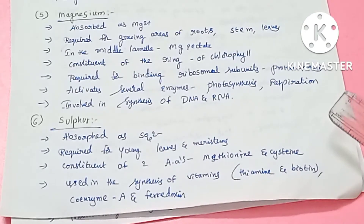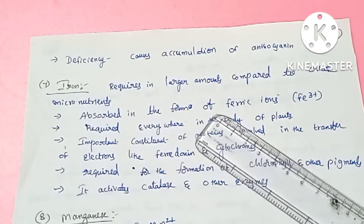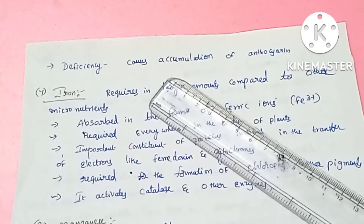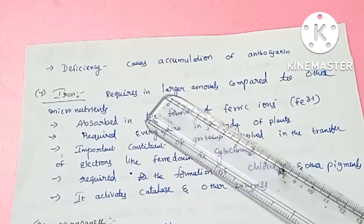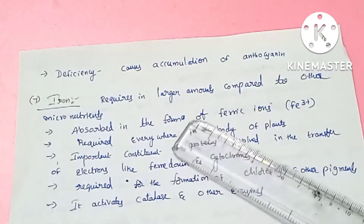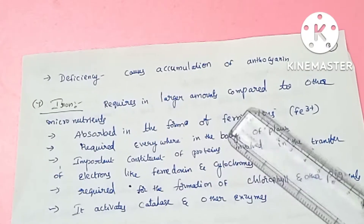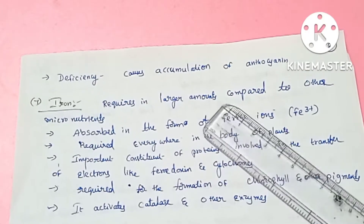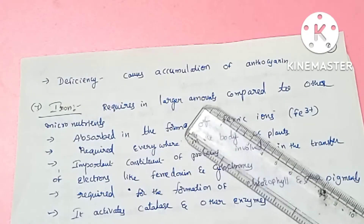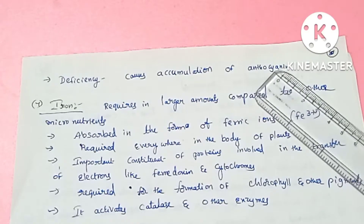There are sulfur-containing amino acids. Sulfur deficiency causes the accumulation of anthocyanin — a purple pigment — in different parts of the plant.